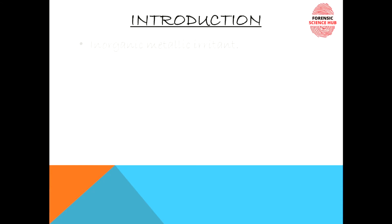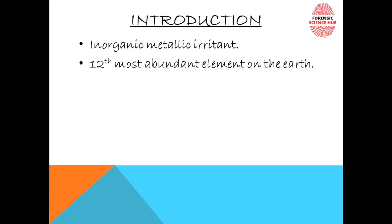First, introduction. Arsenic is an inorganic compound. It is a metal and it comes under the category of irritants. It is the 12th most abundant element found on the earth. Now, it is neither a metal nor a non-metal, so it comes under the category of semi-metals.